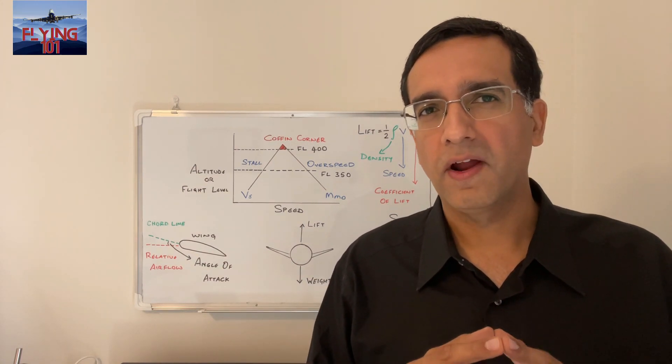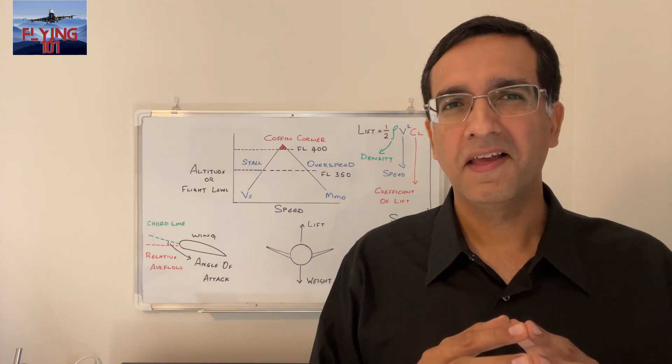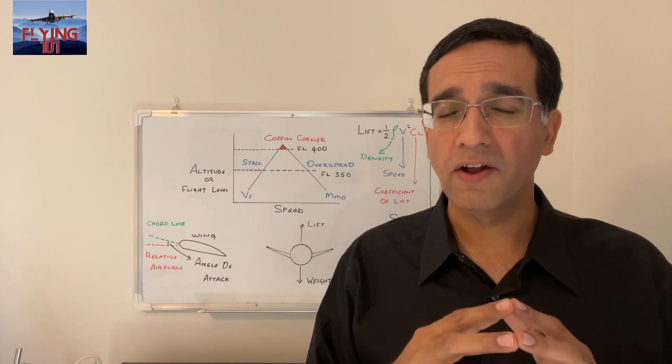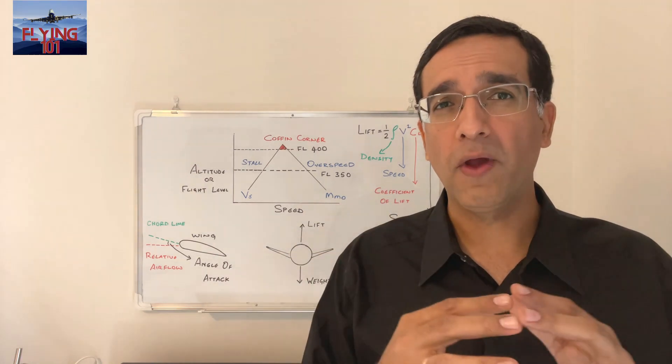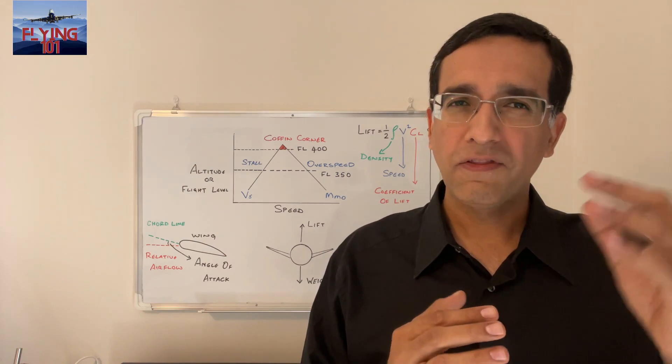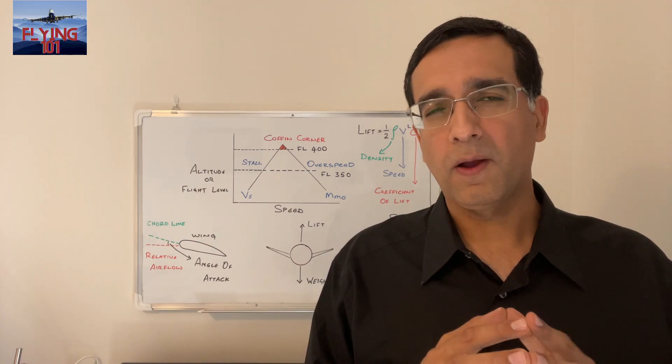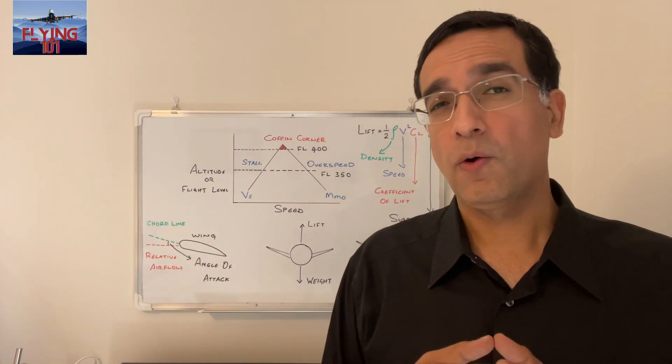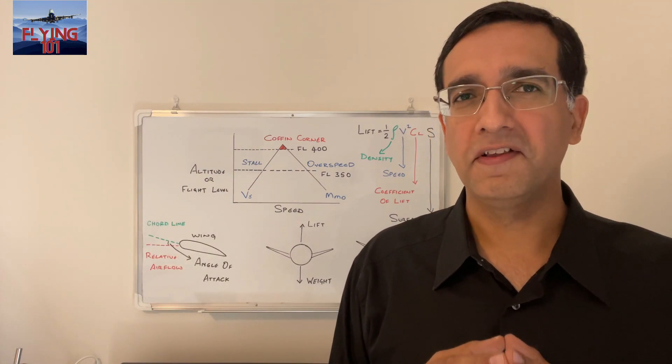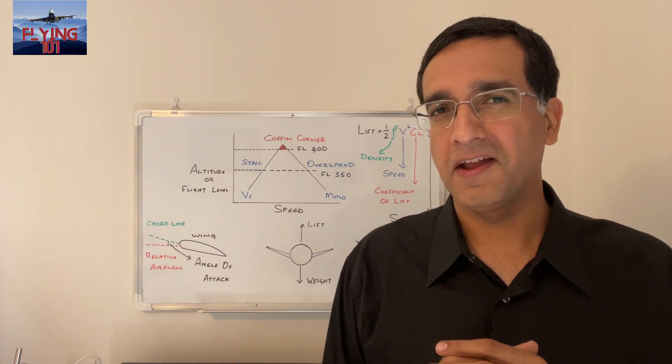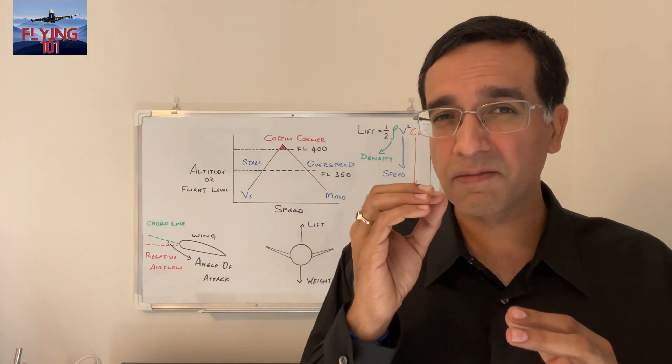Now in case you're wondering what buffeting means, this is a strong vibration that's caused by airflow separation over the surface of the wings. To recap, when the difference between the low speed buffet, one that would be caused by a high incidence or high angle of attack stall, and the high speed Mach buffet approaches zero, the aircraft would be approaching its coffin corner at that specific altitude.